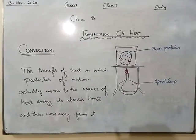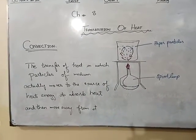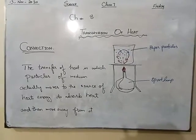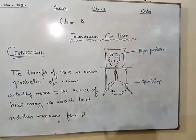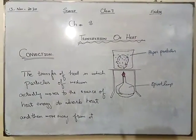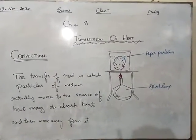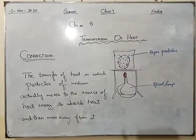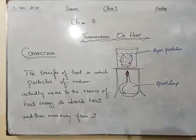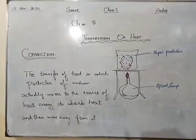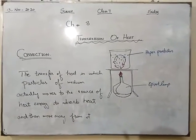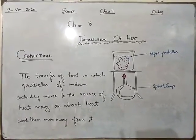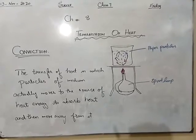We will start with liquids and gases, as convection takes place in liquids and gases. Convection is basically in liquids and gases because their particles have spaces between them. Due to these spaces, the particles can move randomly. So convection does not happen in solids — in solids, the particles vibrate but do not move freely.